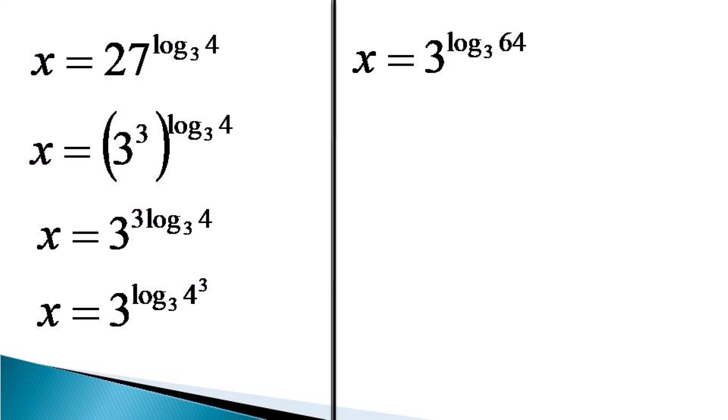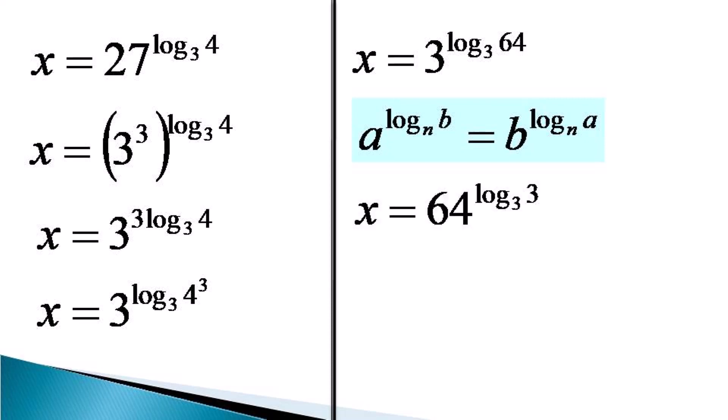Now we use the property of logarithmic index: a raised to the power log b to the base n is equal to b raised to the power log a to the base n. Using this property, x becomes equal to 64 raised to the power log 3 to the base 3, and since log 3 to the base 3 is unity, we get the value of x is equal to 64.